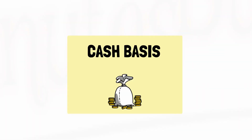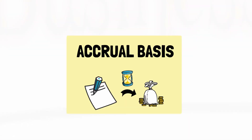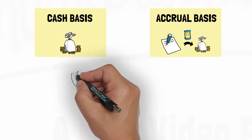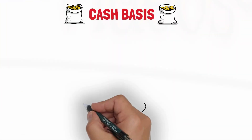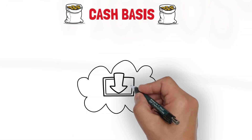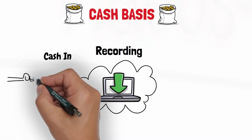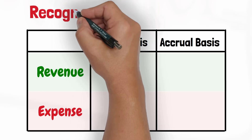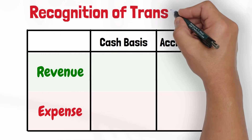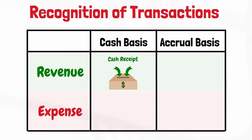The cash basis and accrual basis are two methods of accounting used to record financial transactions in a business. The cash basis of accounting recognizes transactions only when cash is received or paid out. Revenue is recognized only when it is received in cash, and the expense is recognized only when it is paid in cash.